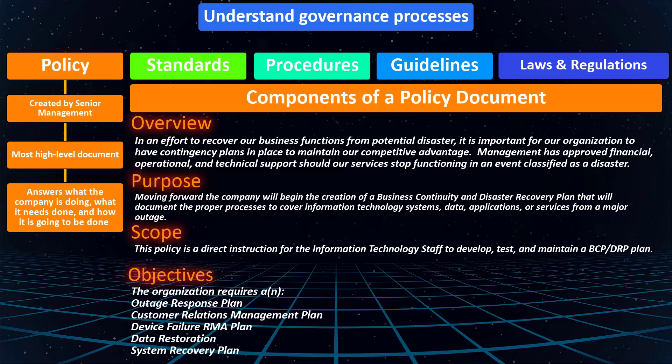This is the first step in the governance process: to issue a policy. There must be a policy for everything in the company — otherwise it doesn't happen. Any actions, any new technology, hiring or firing anyone — we do all this because there is a policy for it. If there isn't a policy, management needs to create one to address it.